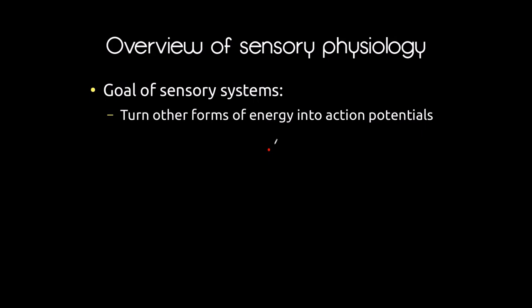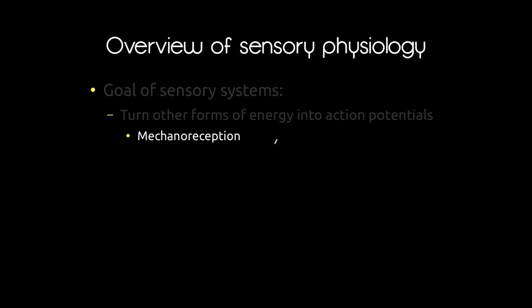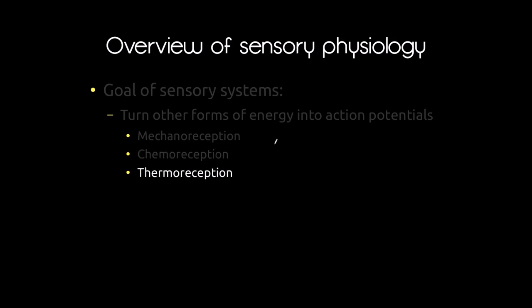First off, one type is mechanoreception — the turning of some sort of mechanical energy or mechanical changes to the environment into action potentials. We also have chemoreception, which is detecting chemical changes or types in the environment. Thermoreception is detecting temperature, particularly temperature changes. And photoreception is detecting light or converting changing light energy into action potentials.